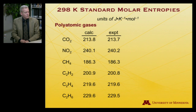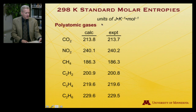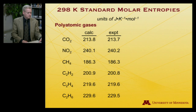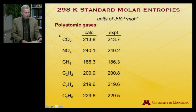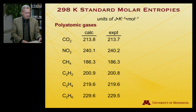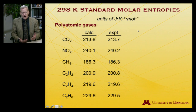Looking now at some polyatomic gases at 298 K: carbon dioxide, nitrogen dioxide, methane, acetylene, ethylene, and ethane. One purpose of this slide is to illustrate the remarkable agreement between calculated entropies — derived from molecular properties like mass, rotational temperature, vibrational temperature, and electronic ground state degeneracy — and experimental entropies. To within 0.1 joules per Kelvin per mole, the agreement is spot-on quantitative.